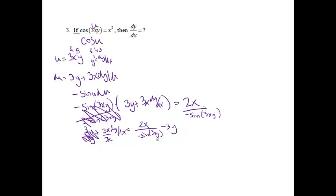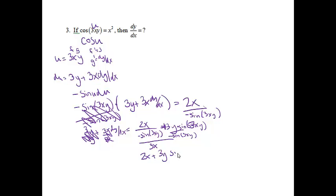Now I'm going to divide both sides by 3x, and from here it's just cleaning it up. We have a complex fraction, which we're not allowed to have. I'll get a common denominator of negative sine of 3xy, which means I need to multiply the numerator — multiplying by negative makes that a plus. So on top I have 2x plus 3y sine of 3xy, all over negative sine of 3xy, divided by 3x.